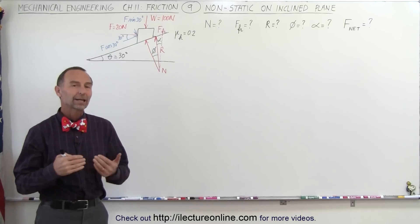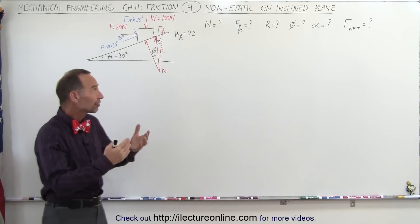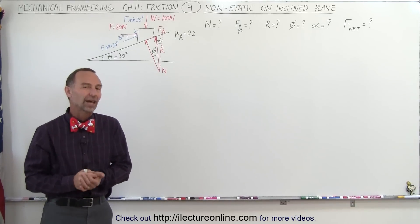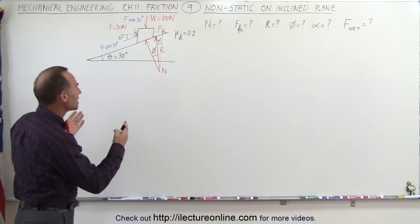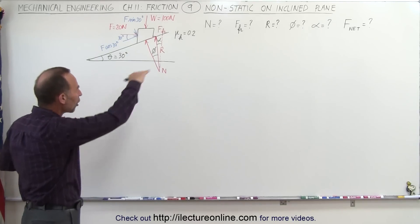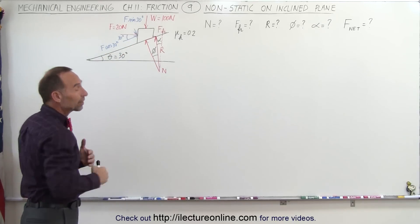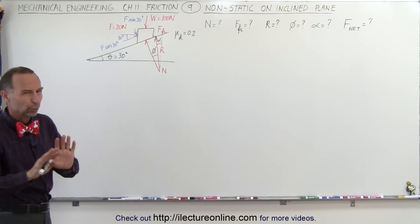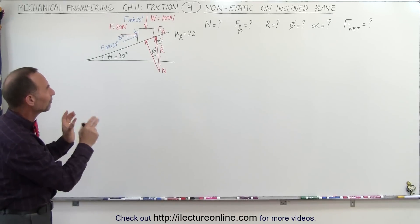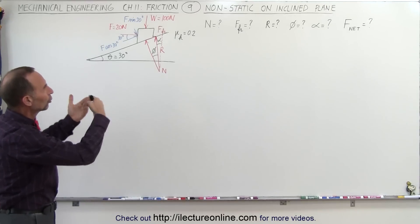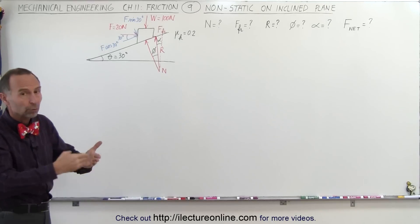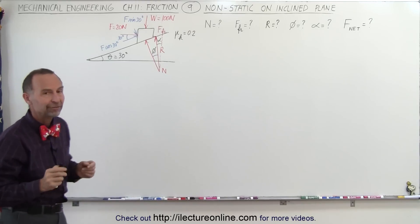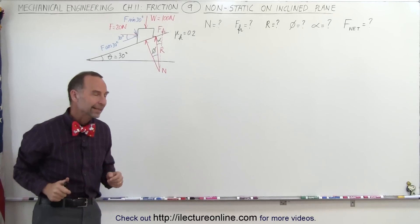Welcome to Electron Line. To get a better understanding of how friction works on an inclined plane, we're going to have a non-static example. The net forces along the inclined plane are not going to equal zero, therefore there's going to be an acceleration. We're not going to worry about the acceleration, but we do want to find all the various forces: the normal force, the friction force, the resultant force, the various angles, and the net force along the incline.